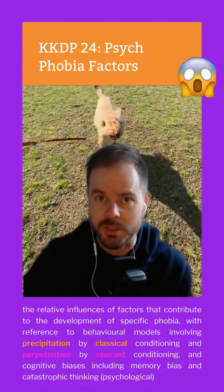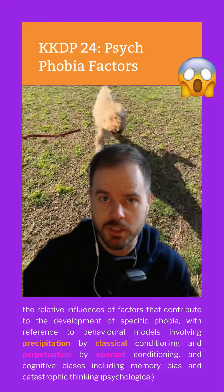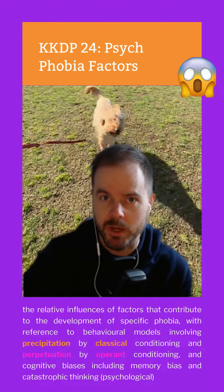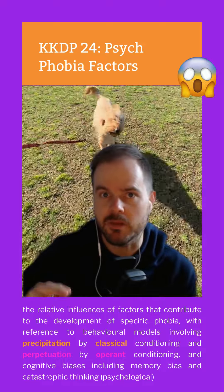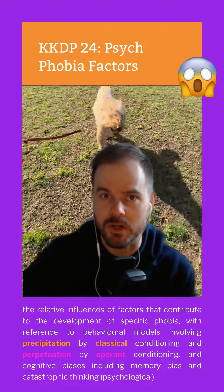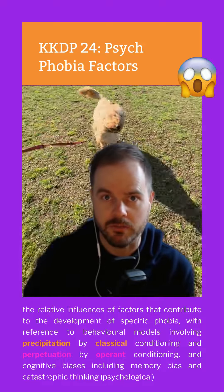So to summarise: we have precipitating by classical conditioning, perpetuating by operant conditioning, and then memory and cognitive biases and catastrophic thinking.